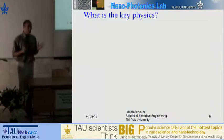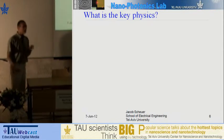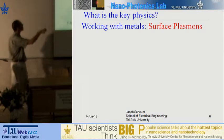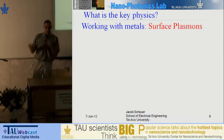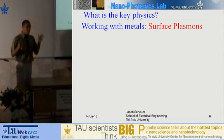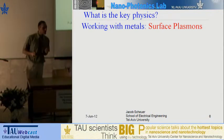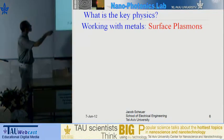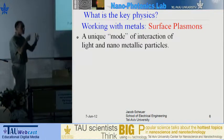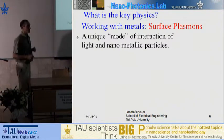So what's the key physics here? It's not very simple but it's not very complicated. It has to do with working with metals. When light and matter interact at specific conditions, there is a phenomenon which can emerge depending on the circumstances, known as a surface plasmon. It's a unique mode of interaction of light and a metallic particle.